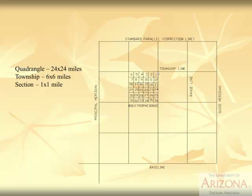Each section is one square mile — 640 acres. A quadrangle is about 576 square miles, or roughly 368,640 acres. We break that down into individual townships, and you can see the township lines and range lines. Range lines run north and south. Townships are further divided into individual sections of 640 acres each.